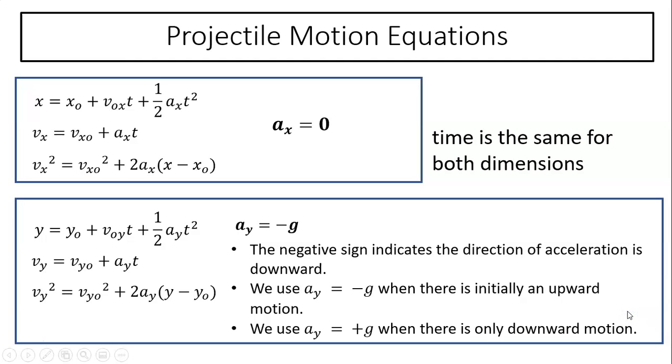Projectile motion equations. To solve projectile problems, we have to use kinematic equations with constant acceleration separately for x dimension and y dimension. As you can see, for x dimension, since acceleration equals zero, really only the top equation is useful. The other two equations are not useful for us.